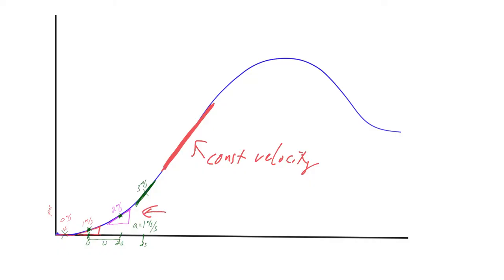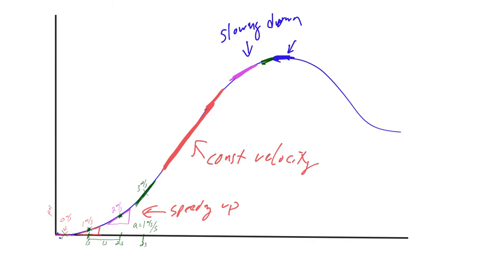The earlier curved region we said was speeding up. Now in this next region, the slope is gradually decreasing — shallower and shallower — until at the very top it's a horizontal slope. In this region we're slowing down, traveling a shorter distance in the same period of time. At the top, horizontal means we've stopped. And notice after that we're actually reversing direction — moving backwards.